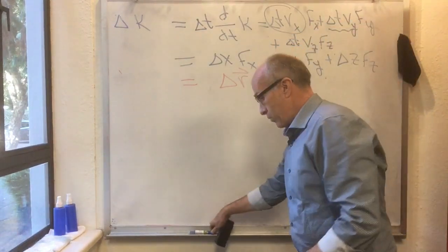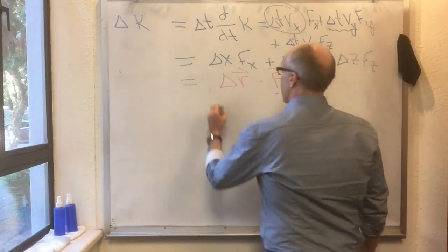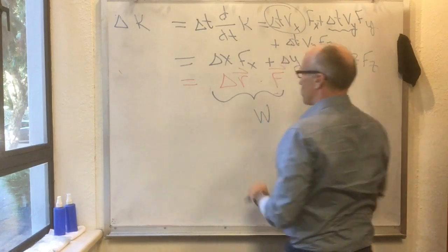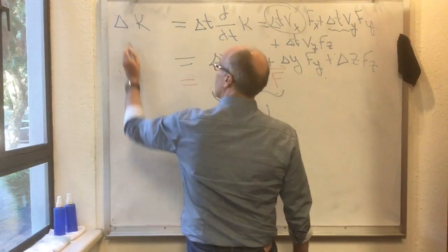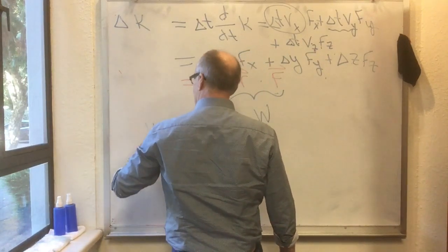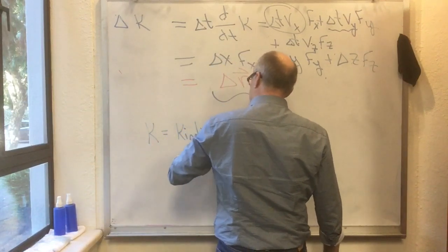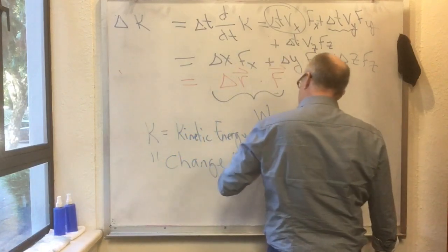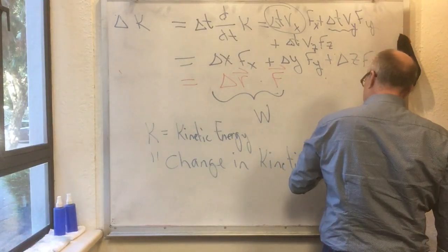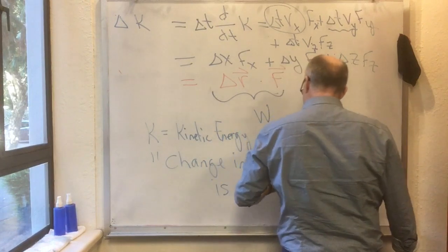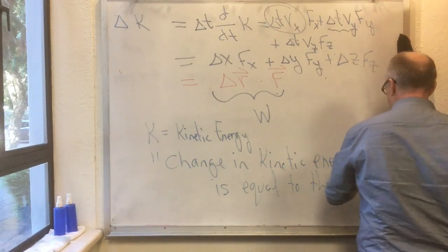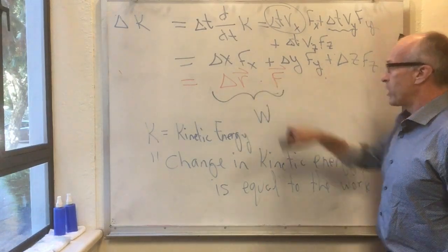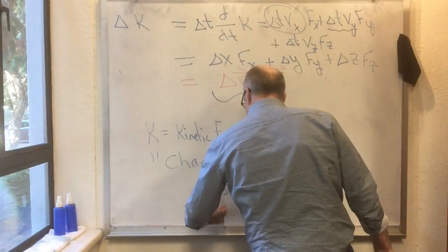Only one last thing left to tell you, which is we're going to give some actual names to these things. This thing here, delta r dot f, that's called the amount of work done, or delta W. Delta k is the change in—and I'm giving it a name now—k was actually short for kinetic energy. So now we can say it: the change in the kinetic energy is equal to the work done on the particle.